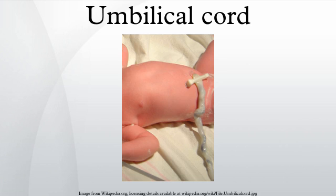In placental mammals, the umbilical cord is a conduit between the developing embryo or fetus and the placenta. During prenatal development, the umbilical cord is physiologically and genetically part of the fetus, and normally contains two arteries and one vein, buried within Wharton's jelly. The umbilical vein supplies the fetus with oxygenated, nutrient-rich blood from the placenta. Conversely, the fetal heart pumps deoxygenated, nutrient-depleted blood through the umbilical arteries back to the placenta.